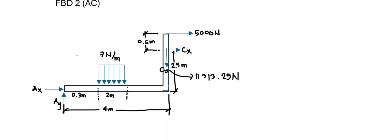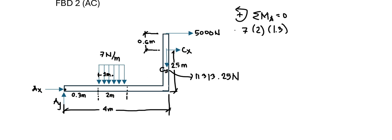So we proceed with the second free body diagram AC, now knowing CY and DY. Here CY is known with the value 11,313.25. For this free body diagram, notice that we have three unknowns, meaning we can directly solve for them using the three equations of equilibrium: summation force X, Y, and moment. Taking summation of moments at A to solve for CX, with counterclockwise as positive: we have a uniformly distributed load of 7 N/m multiplied by 2 meters, with a moment arm of 1.3 meters from A, acting clockwise — so it is negative.